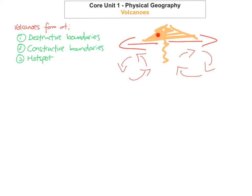One thing to note is that when the lava comes out of the volcano onto the surface, it will cool and solidify very quickly — solidify just means turn into rock. This is usually because of the cold ocean water surrounding it. A good example is Iceland, and an example of a volcano there is Surtsey, where the two separating plates are the North American plate and the Eurasian plate on the Mid-Atlantic Ridge.